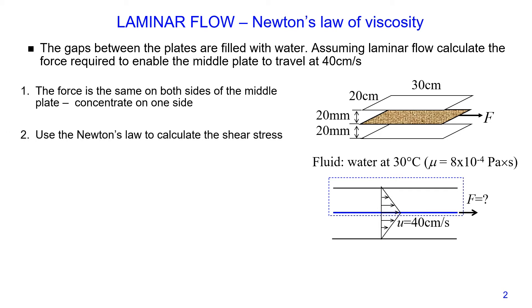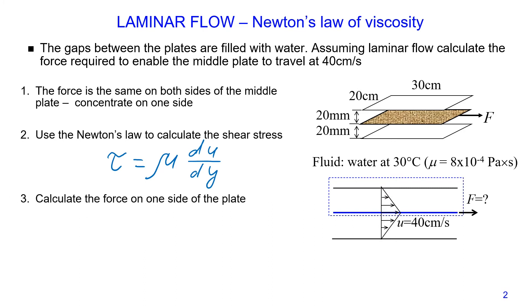We will use Newton's law of viscosity to calculate the shear stress. Newton's law of viscosity states that shear stress equals dynamic viscosity multiplied by the velocity gradient du/dy. Since we can calculate the shear stress, we can then calculate the force. We know that shear stress equals force divided by the area over which it acts, so force equals shear stress multiplied by area.